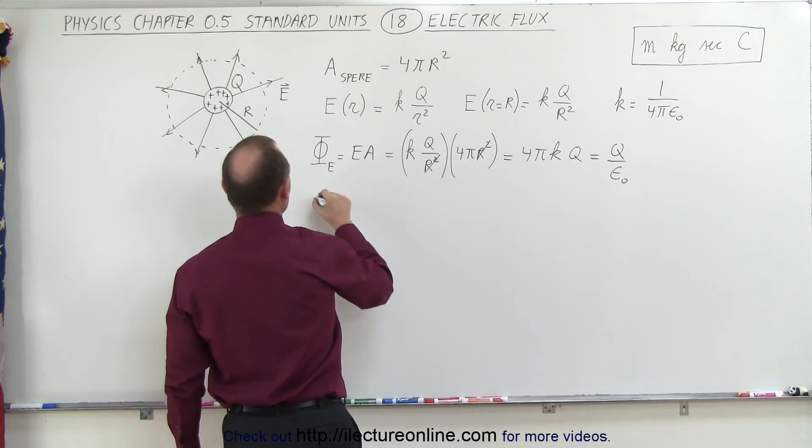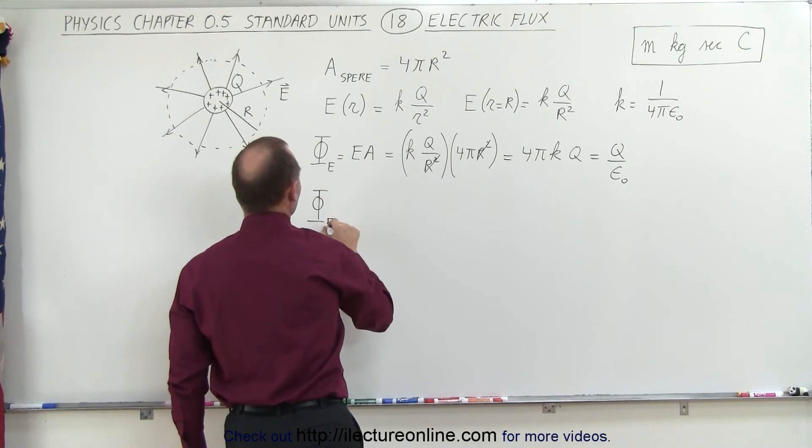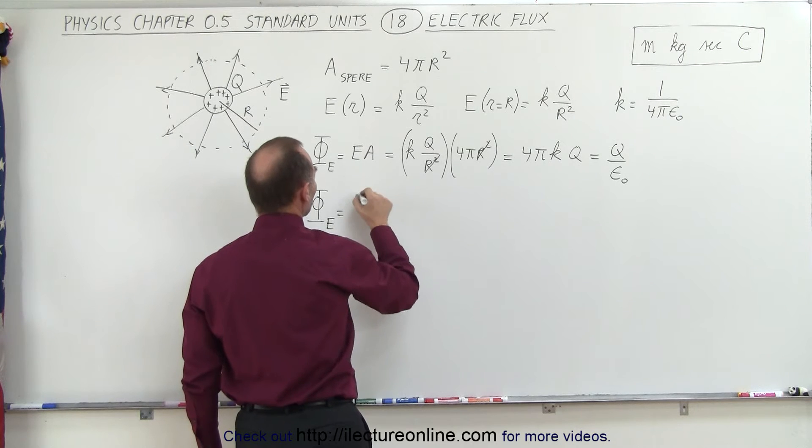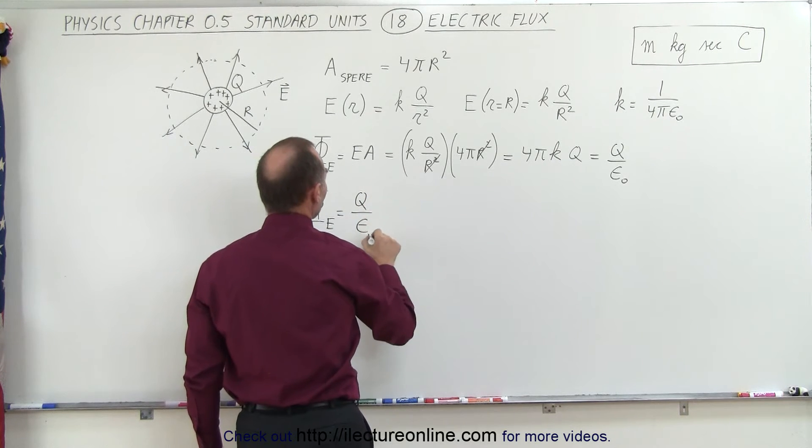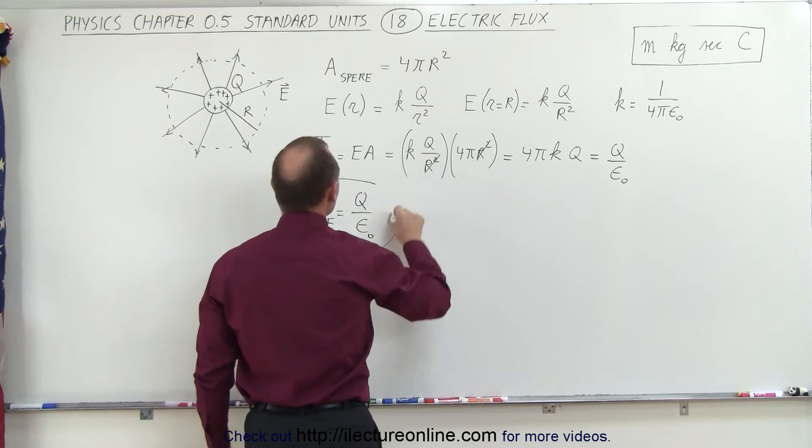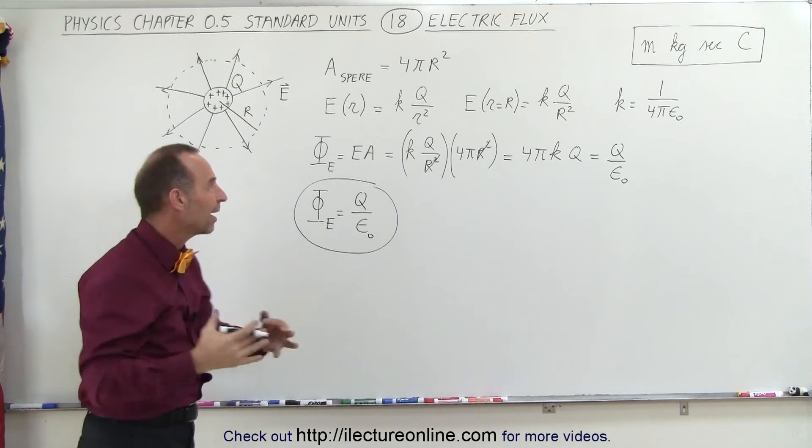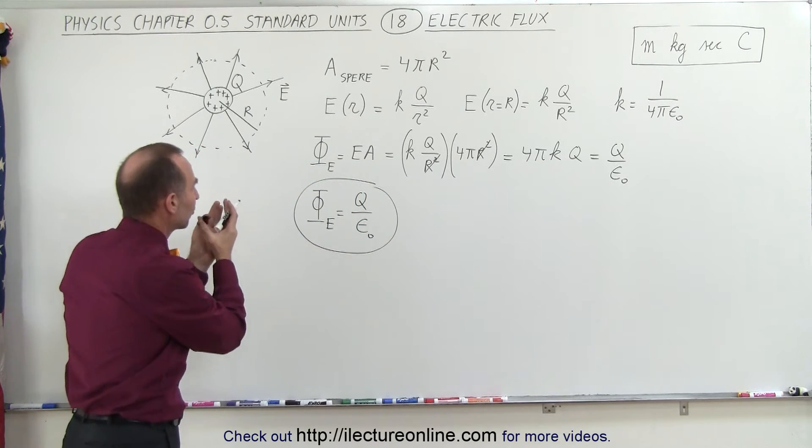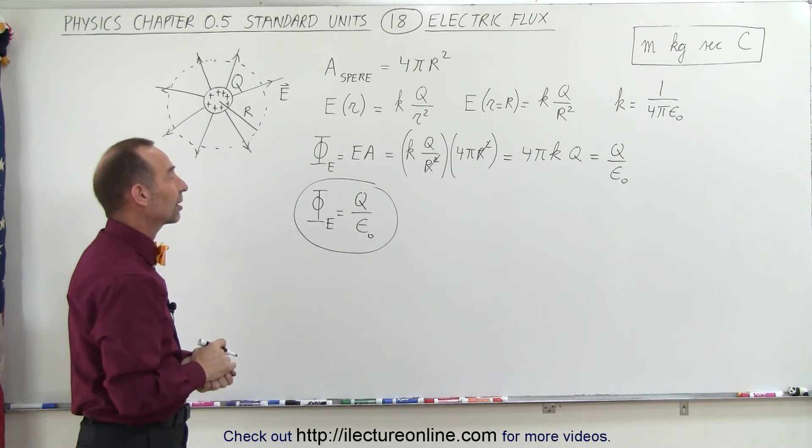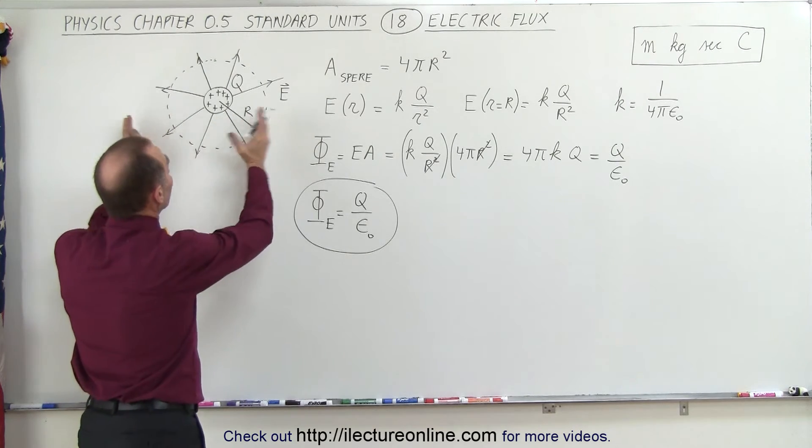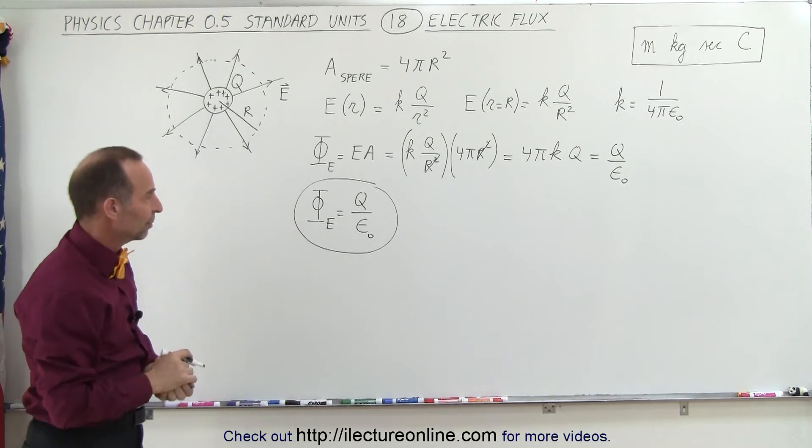Which means that the electric flux is simply a function of the total charge on the object divided by epsilon sub nought, which means it gives you the total amount of electric line flux or electric field flux emanating from that charge object, irregardless of how big the radius is. You see, the radius simply cancels out.